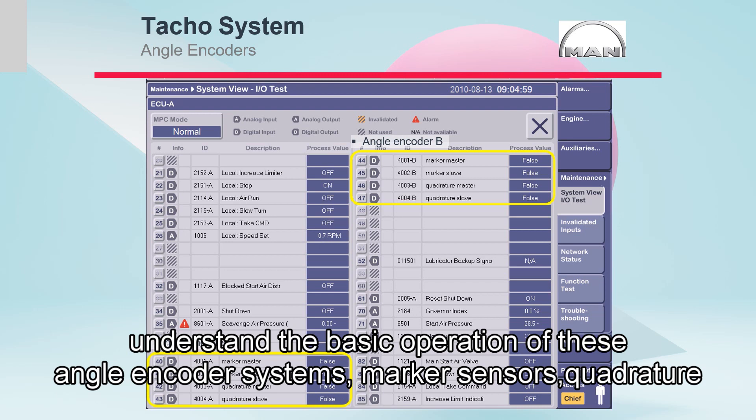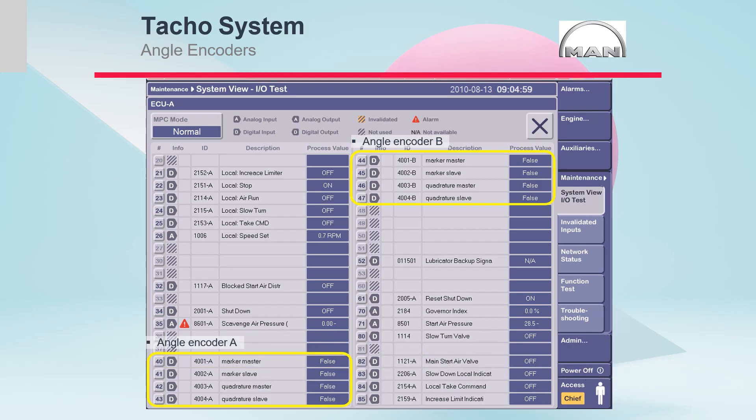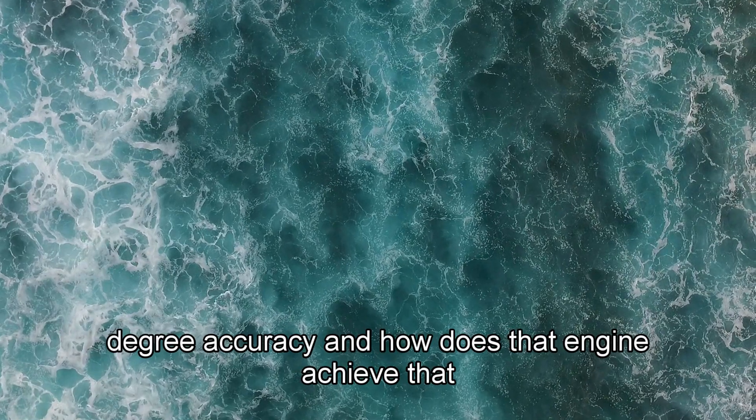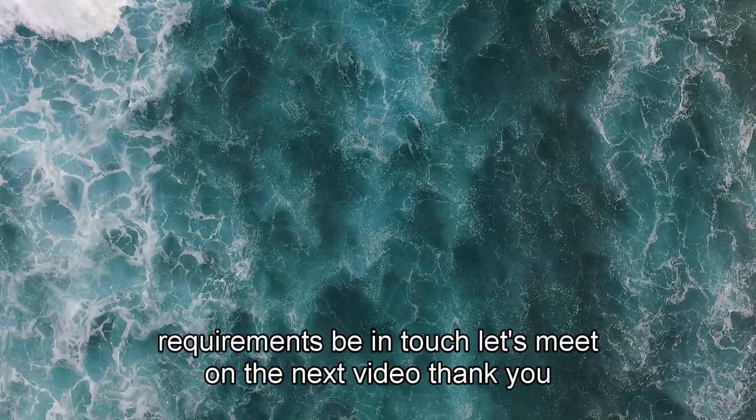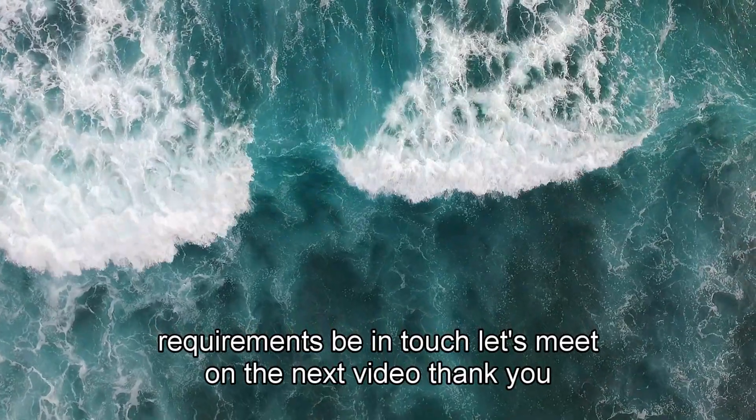I hope that you understand the basic operation of these angle encoder systems, marker sensors, quadrature sensors, and the requirement to have 22.5 degree accuracy, and how the engine achieves that requirement. Keep in touch. Let's meet on the next video. Thank you.